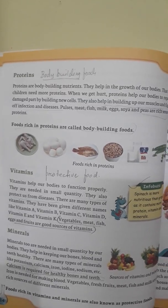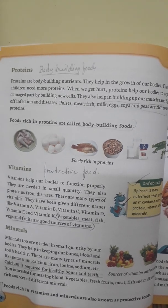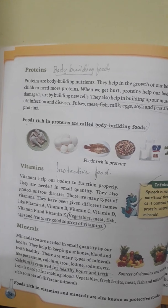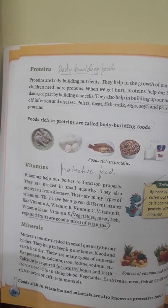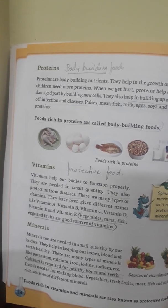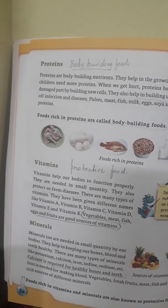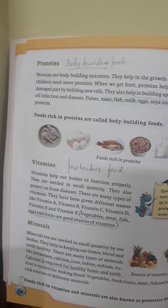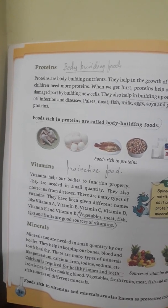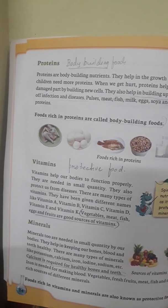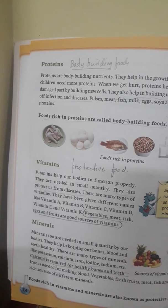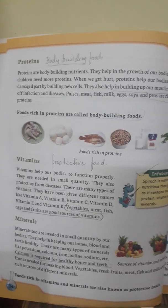Coming to the next part — vitamins, which we call protective food. Vitamins are required in a very small quantity but help our body to function properly and protect us from various diseases. The vitamins are: Vitamin A, B, C, D, E and K. These vitamins are found in vegetables, meat, fish, eggs and fruits, which are all good sources of vitamins.